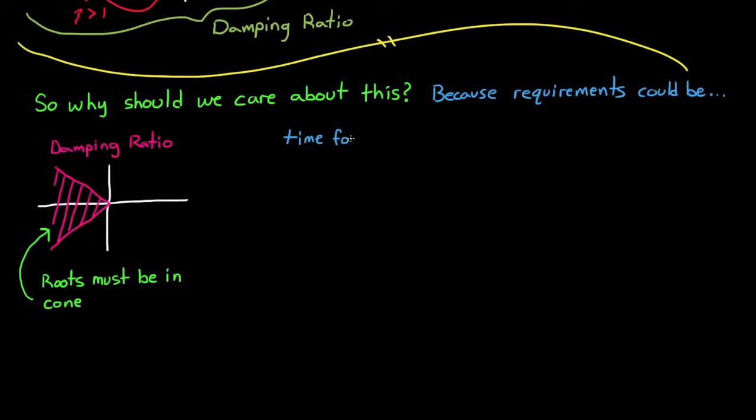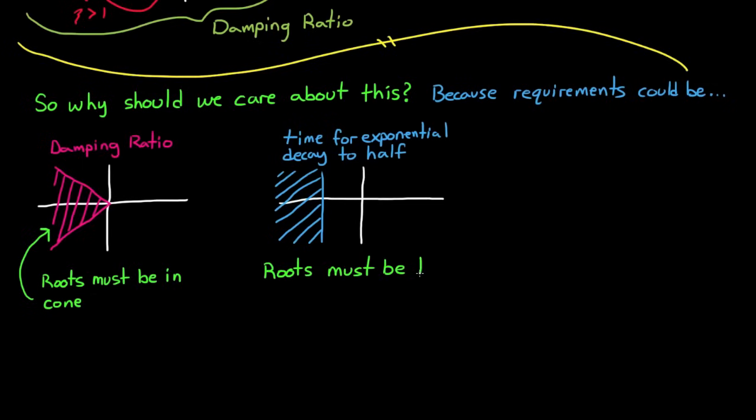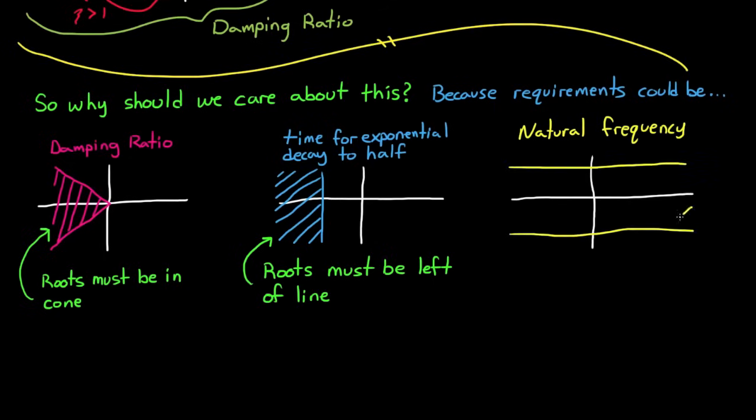If you're given a requirement about time to half, this means that the mode must decay to half its value within a certain amount of time. And since the further a pole is from the origin, the faster it decays, then in order to meet that requirement, all of the roots or the poles must be to the left of that particular time to half line. And finally, if you're given a natural frequency requirement, like the mode has to be slower than one radian per second, then the poles have to fall within this yellow band, or slower than one radian per second.